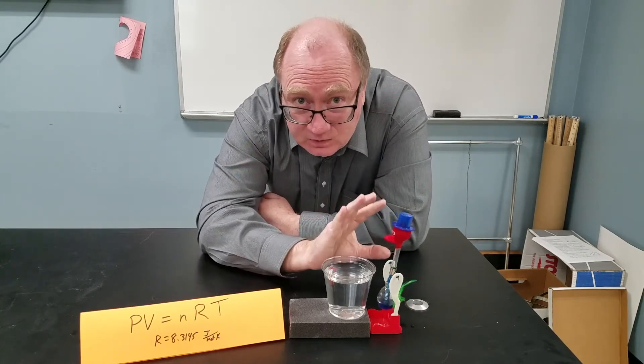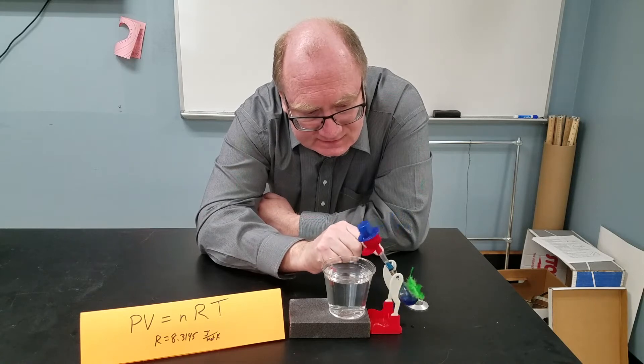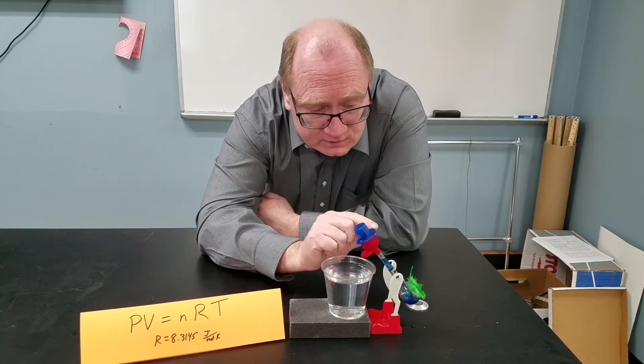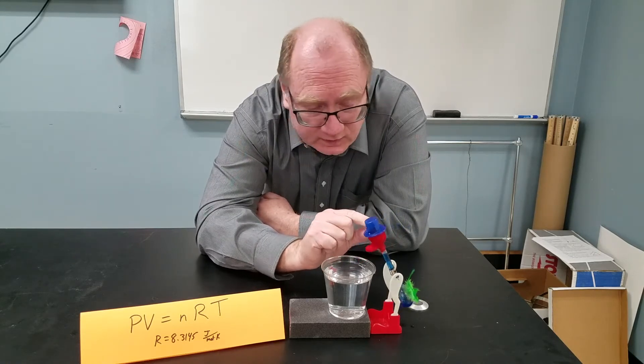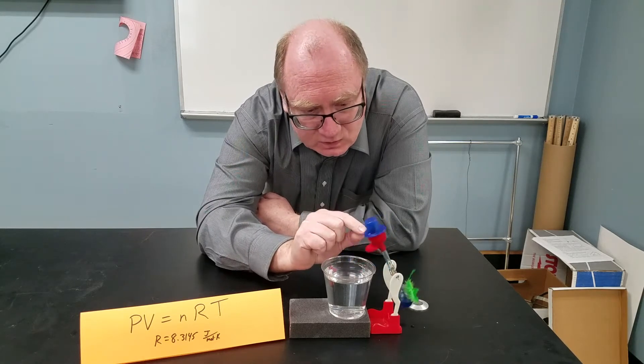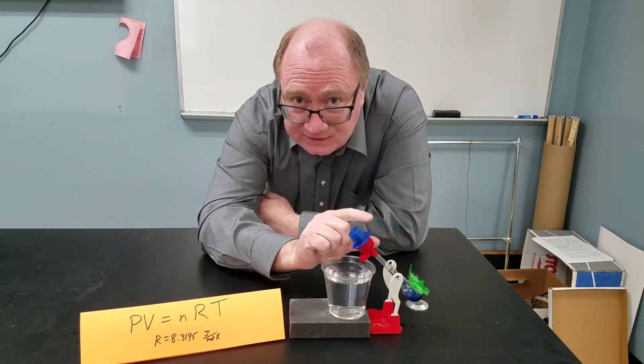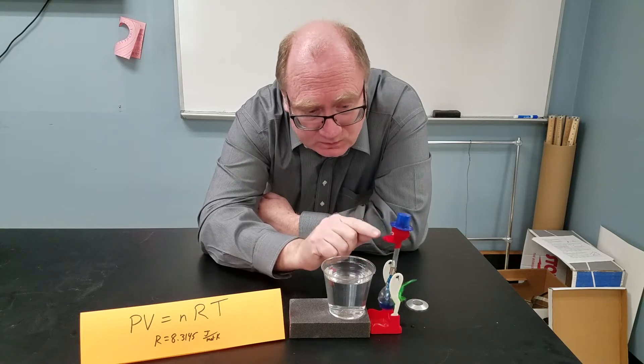But that's not the whole trick. What happens is the chemical that's on the inside has a very low vapor pressure and boiling point. So when that cools, it causes some of that vapor to condense, which also lowers the pressure in the top.